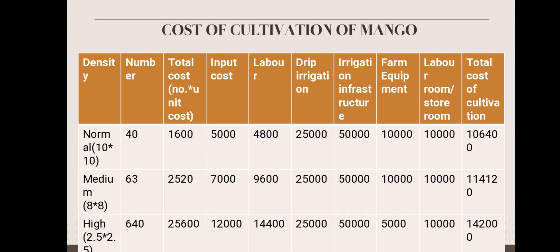Next is medium density plantation. For medium density, 63 plants, total cost two thousand five hundred and twenty, input cost seven thousand, labor cost nine thousand six hundred, drip irrigation 25,000, irrigation infrastructure 15,000, farm equipment 10,000, store room cost 10,000, and total cost is one lakh fourteen thousand one hundred and twenty.